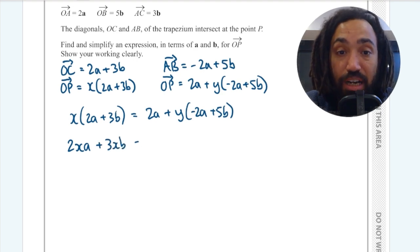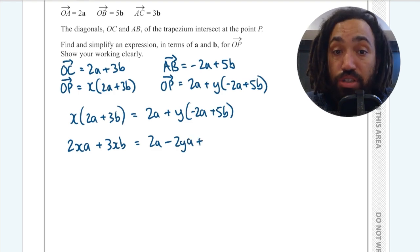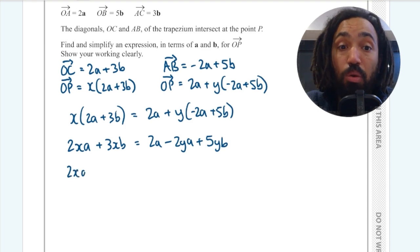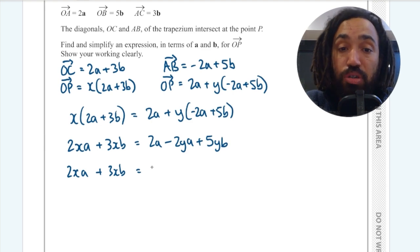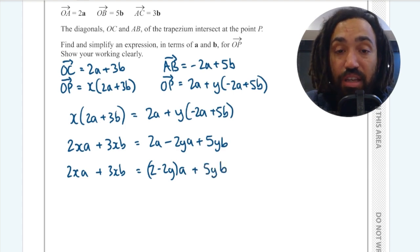So I'm going to expand the brackets and that's going to give me 2XA plus 3XB is equal to 2A minus 2YA plus 5YB. And in doing so I now can see clearly which part of my vectors are A's and which are B's. So I'm going to factorize this left hand side to make it even clearer. And now that I've done that I can equate the coefficients.